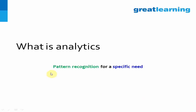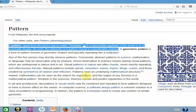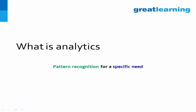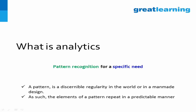What is a pattern? If you look at the definition of the word 'pattern' on Wikipedia, you will find it gives you a hint that a pattern is a regularity in the world — either in the natural world or in a man-made design. That regularity means you can predict it. It will repeat in a predictable manner.